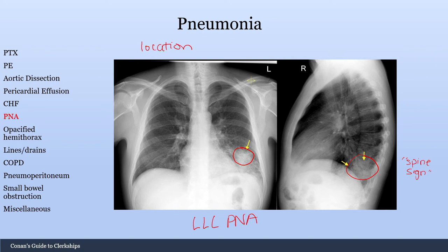This is important because sometimes on your frontal X-ray you won't see a pneumonia clearly, but if you look at the lateral X-ray you might see a positive spine sign, which would be concerning for a consolidation in that area.